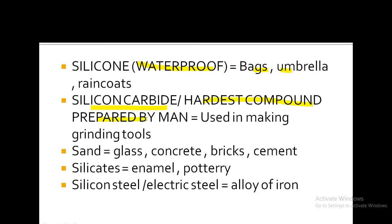Another artificially prepared compound is silicon carbide, which is the hardest compound prepared by man, and that is why it is used in making grinding tools. In the form of sand, silicon is used for the preparation of glass, concrete, bricks, and cement. Silicates — compounds of silica — are used in the enamel and pottery industry. Silicon steel is an alloy of silica and iron, used in electric appliances.